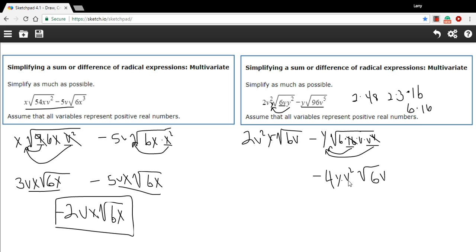And this is good because even though I wrote these variables backwards here, these are definitely like terms. We have a v²y√6v in both of them. So we have 2v²y√6v minus 4v²y√6v, so this is going to be a negative 2v²y times the square root of 6v.